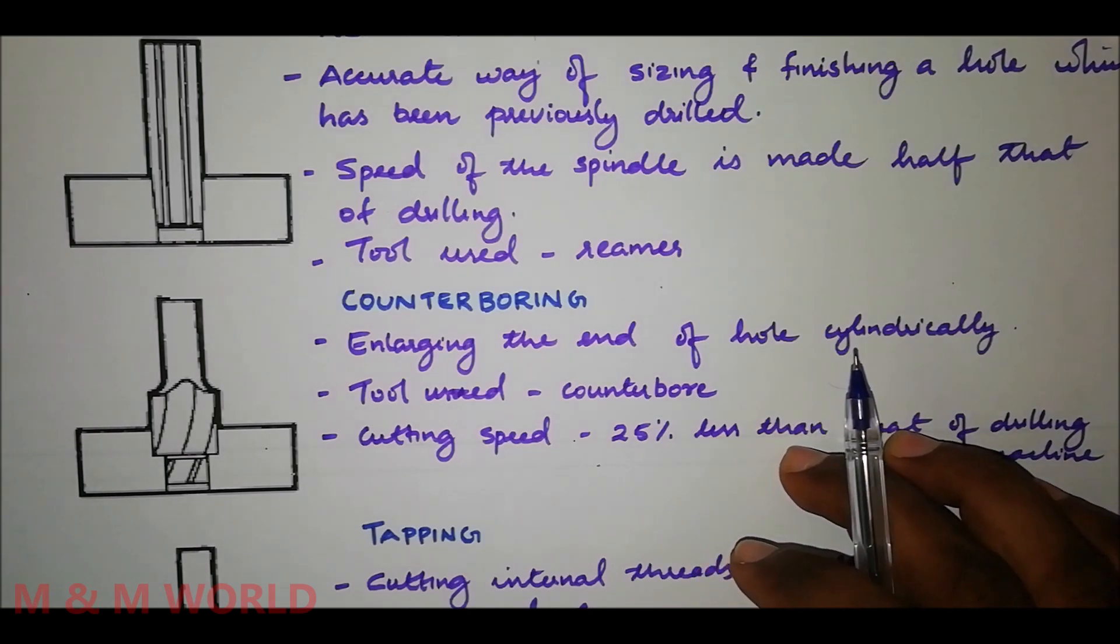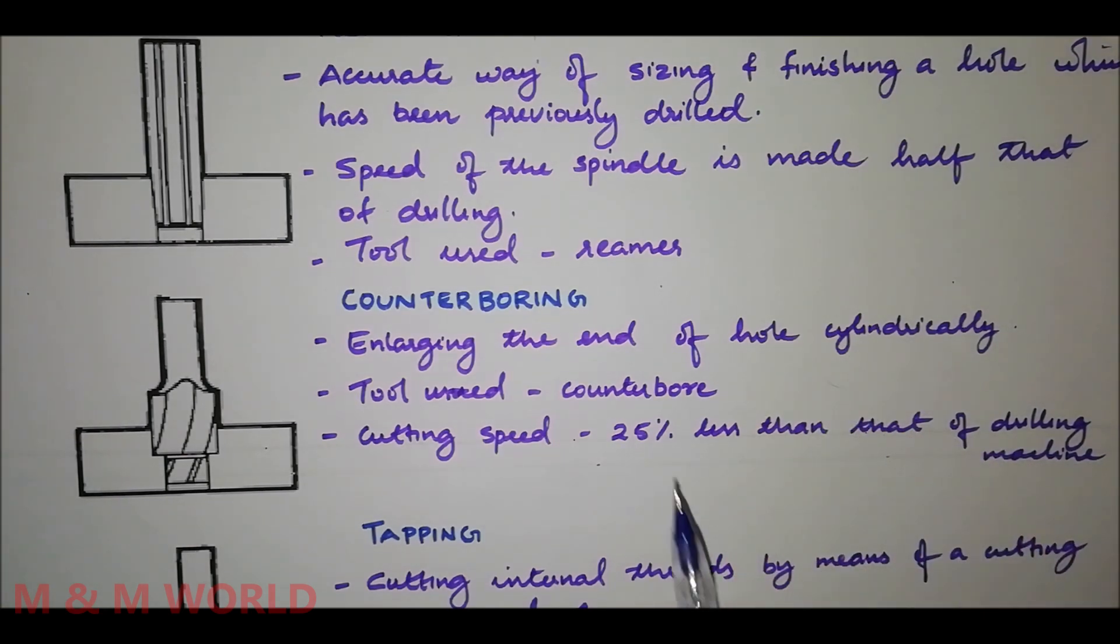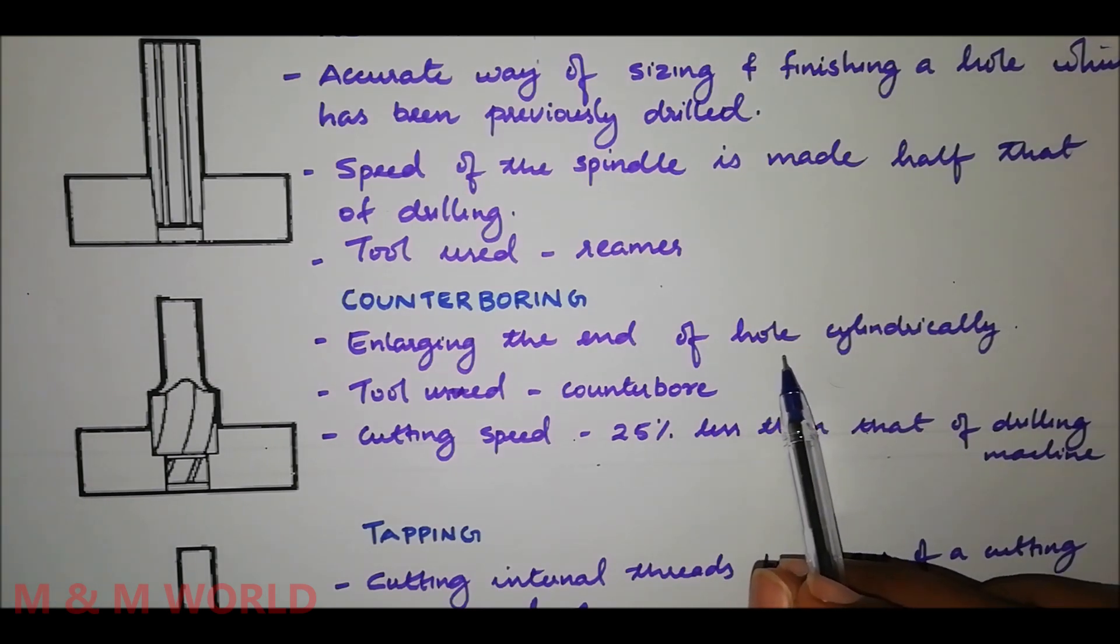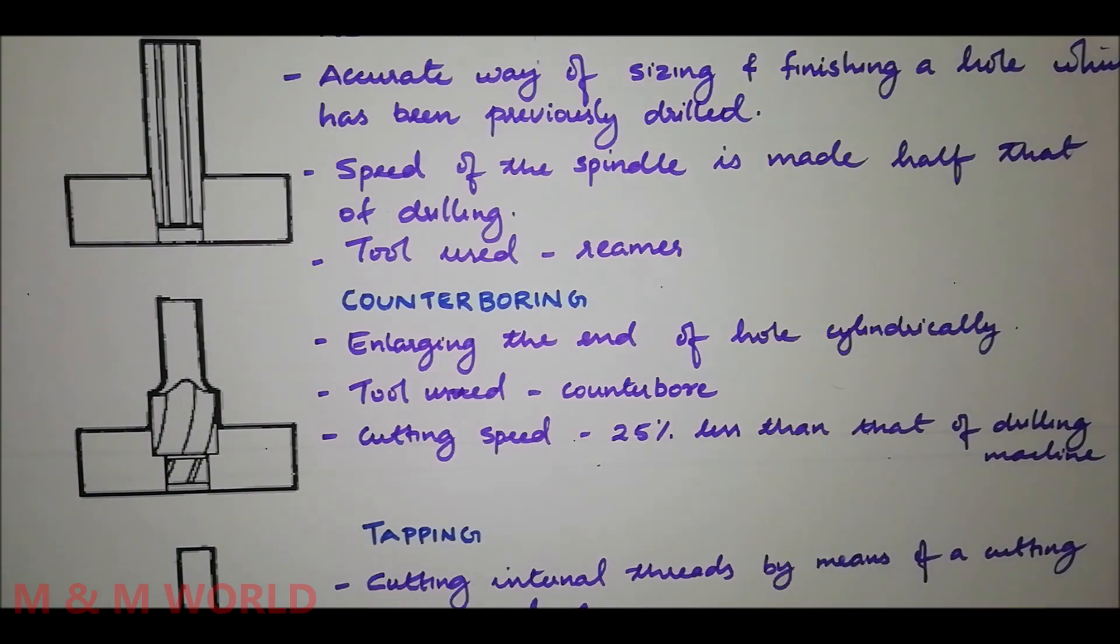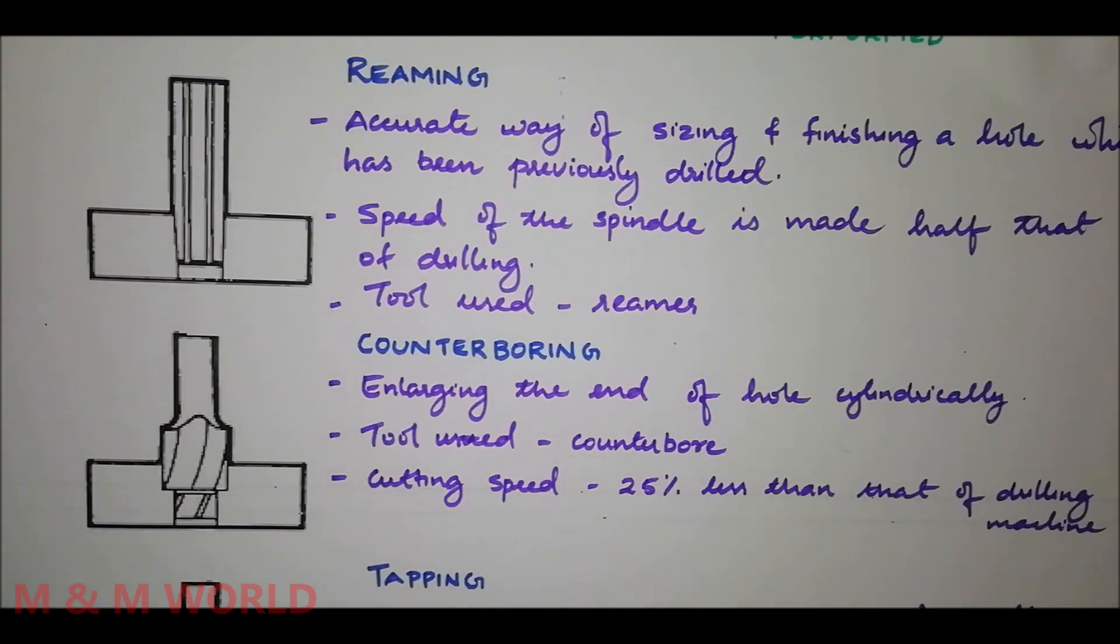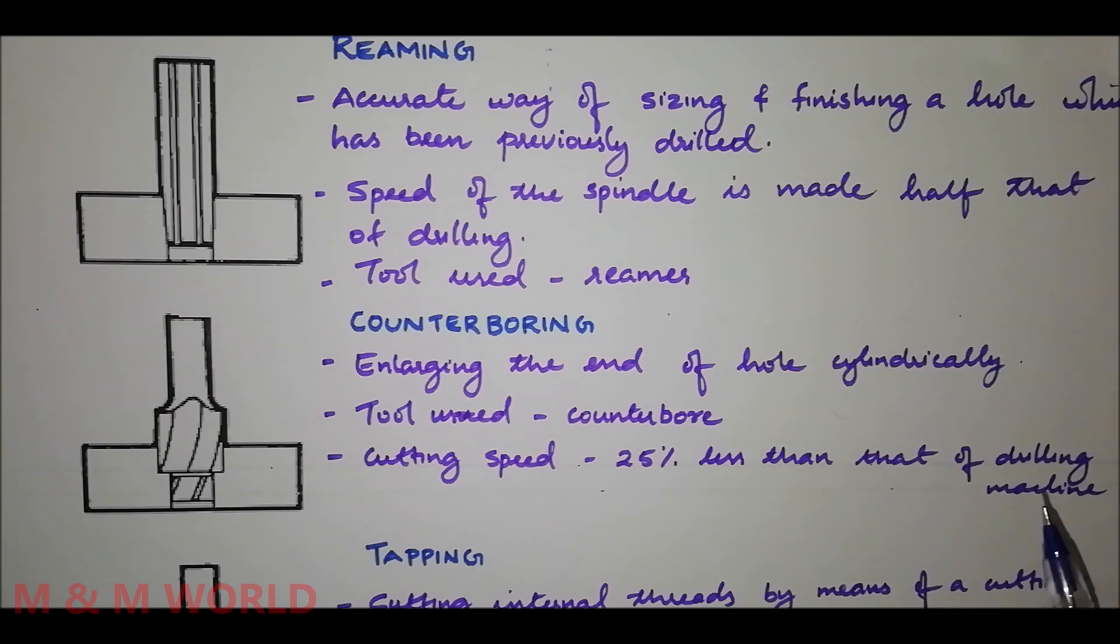The next one is counter boring. Counter boring is the operation of enlarging the end of a hole cylindrically. It is the operation of boring a second hole with a larger diameter than the first but concentric with it. The enlarged hole forms a square shoulder with the original hole and it is necessary to accommodate the heads of bolts, studs and pins.